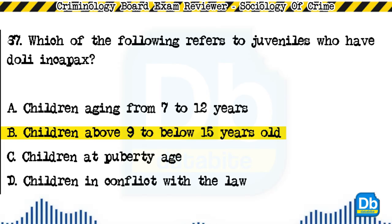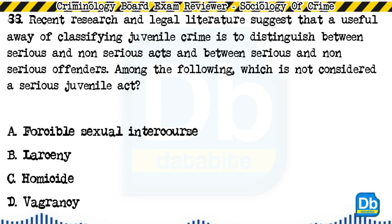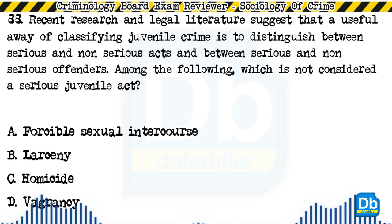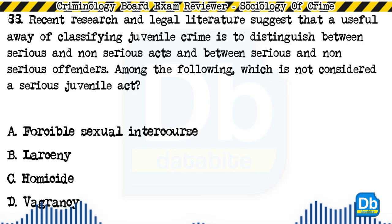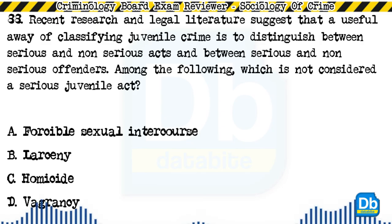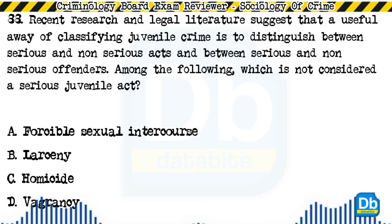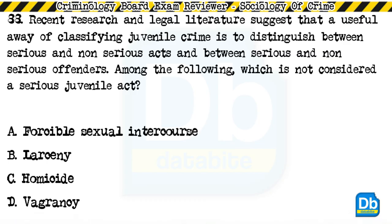Question 88: Recent research and legal literature suggest that a useful way of classifying juvenile crime is to distinguish between serious and non-serious acts and between serious and non-serious offenders. Among the following, which is NOT considered a serious juvenile act? a) forcible sexual intercourse, b) larceny, c) homicide, d) vagrancy. The answer is D, vagrancy.